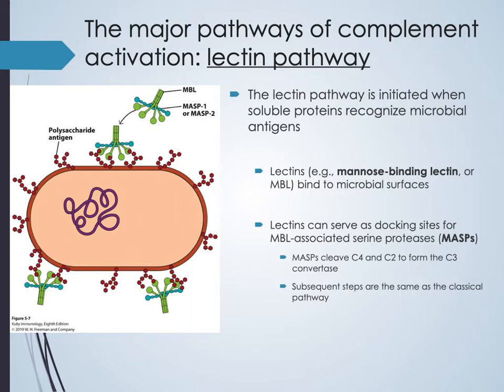The lectin pathway is initiated when soluble proteins in the blood recognize microbial antigens — specifically, lectins bind to polysaccharides or carbohydrates on the microbial surface. A common example is mannose-binding lectin (MBL), which binds mannose, a sugar found on some microbes. This pathway doesn't require prior exposure to the microorganism, though it does require mannose or similar carbohydrates to be present on the surface.